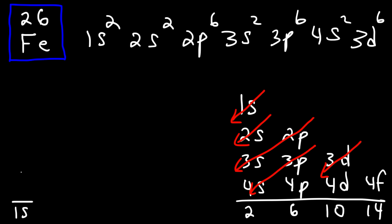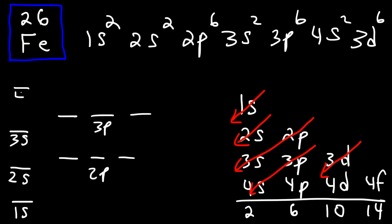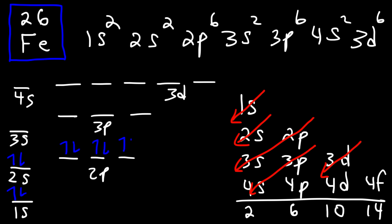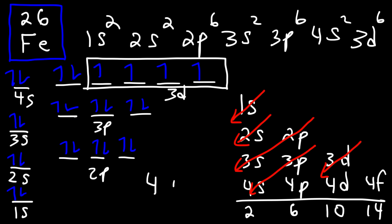Next, let's draw the orbital diagram. Everything below 3D is fully filled. For the 3D sublevel, we place 6 electrons across 5 orbitals: 3D1 through 3D6. Looking at this picture, iron metal has 4 unpaired electrons.